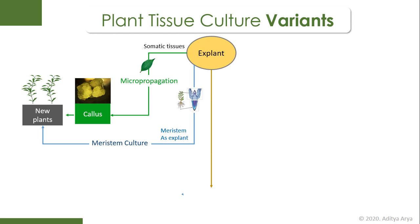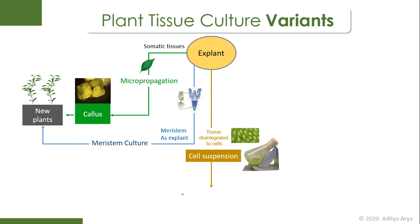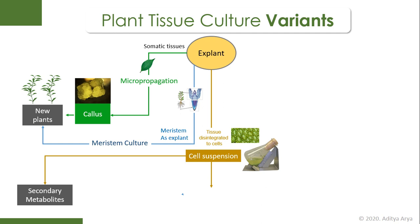In yet another strategy, we can take an explant — again any somatic tissue — and disintegrate that tissue into individual cells using enzymes or physical methods. We then create a suspension of those cells. This cell suspension can be utilized for production of secondary metabolites under artificial conditions. Various pharmaceutically important plant metabolites such as taxol, quinine, and many others are produced by this technique, which is known as cell suspension culture.